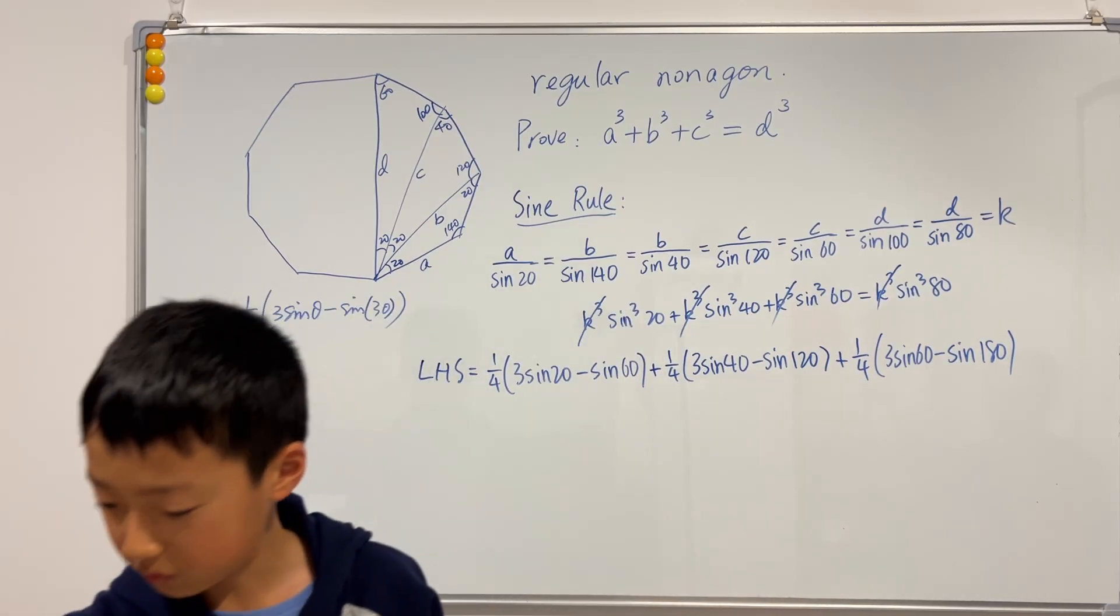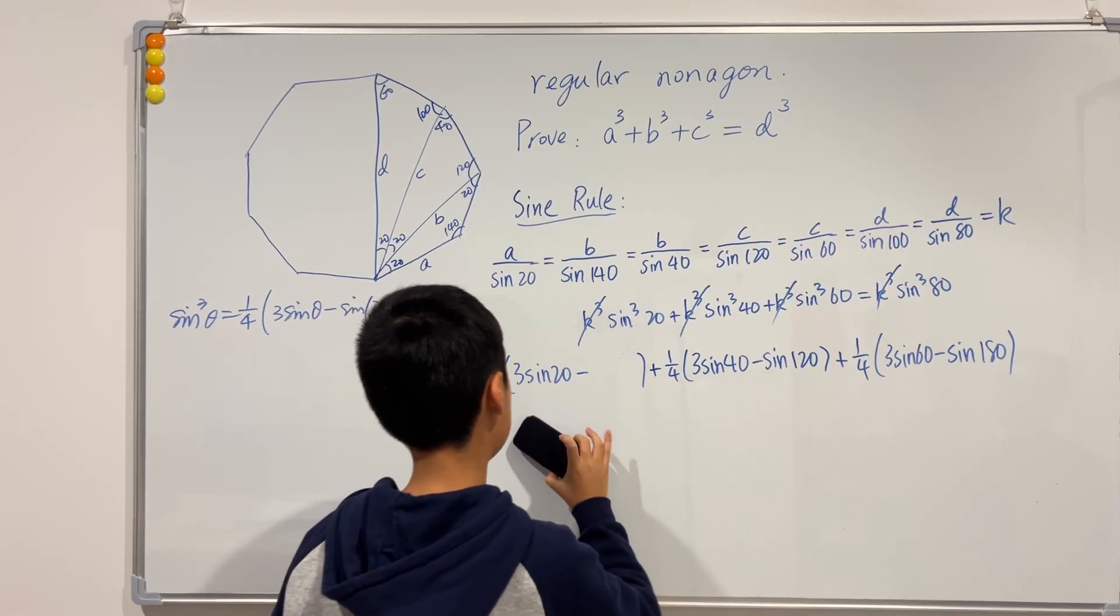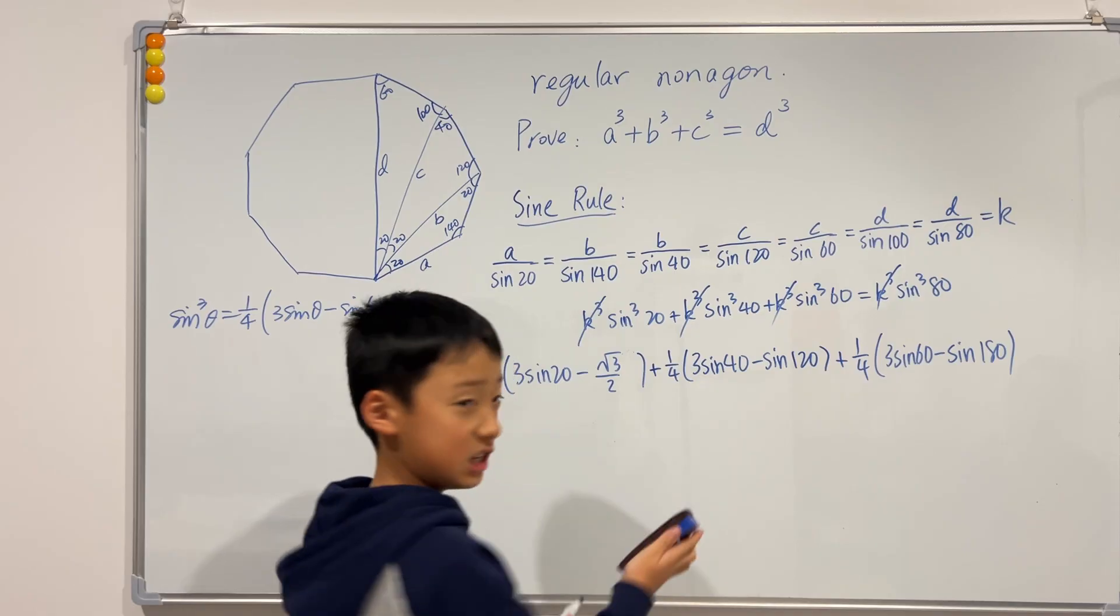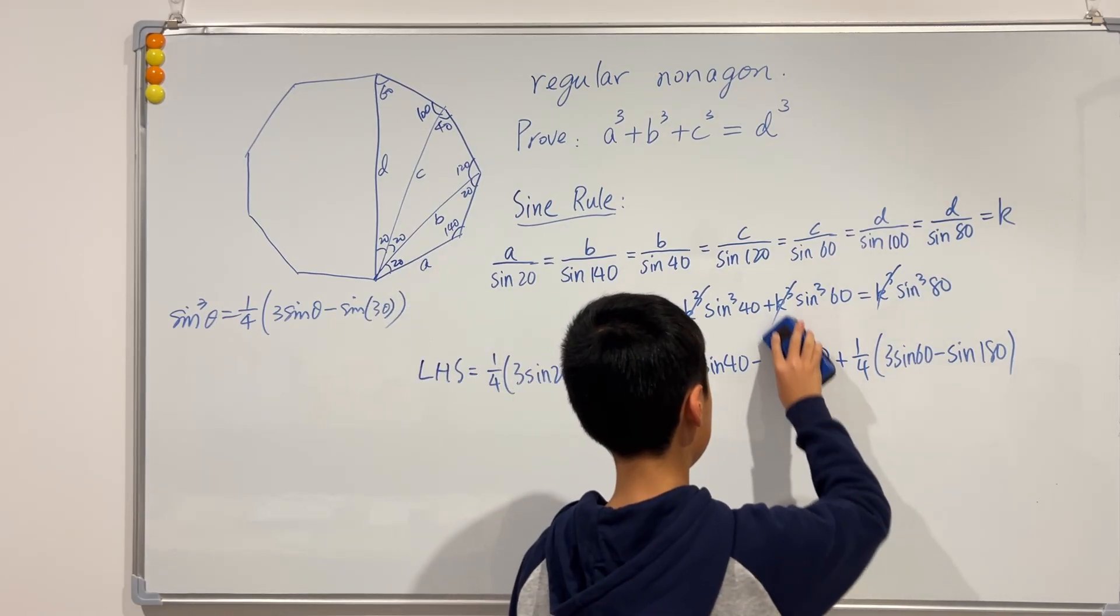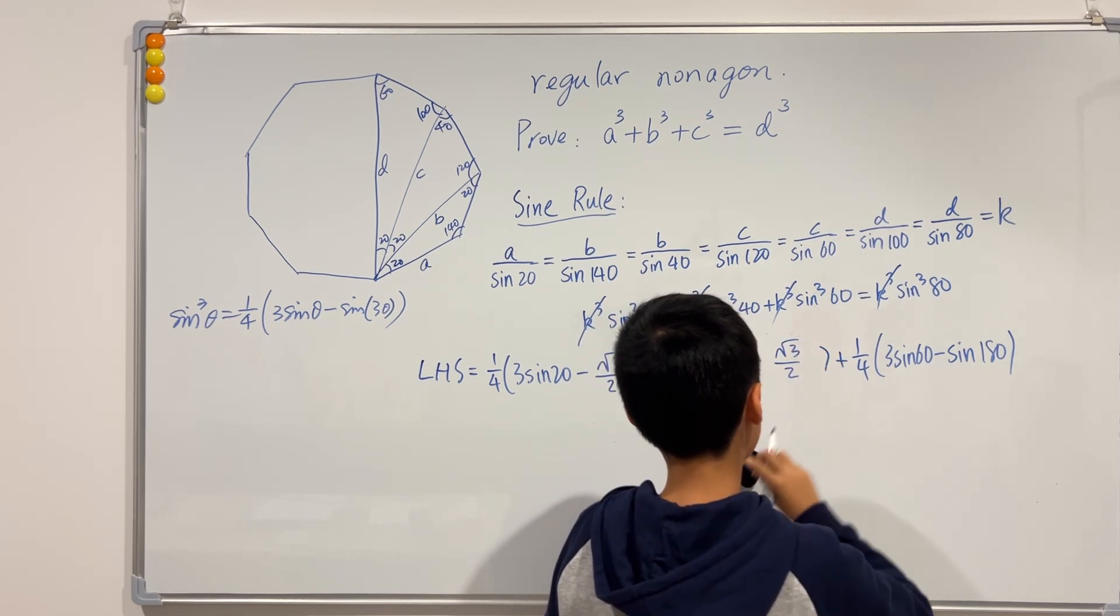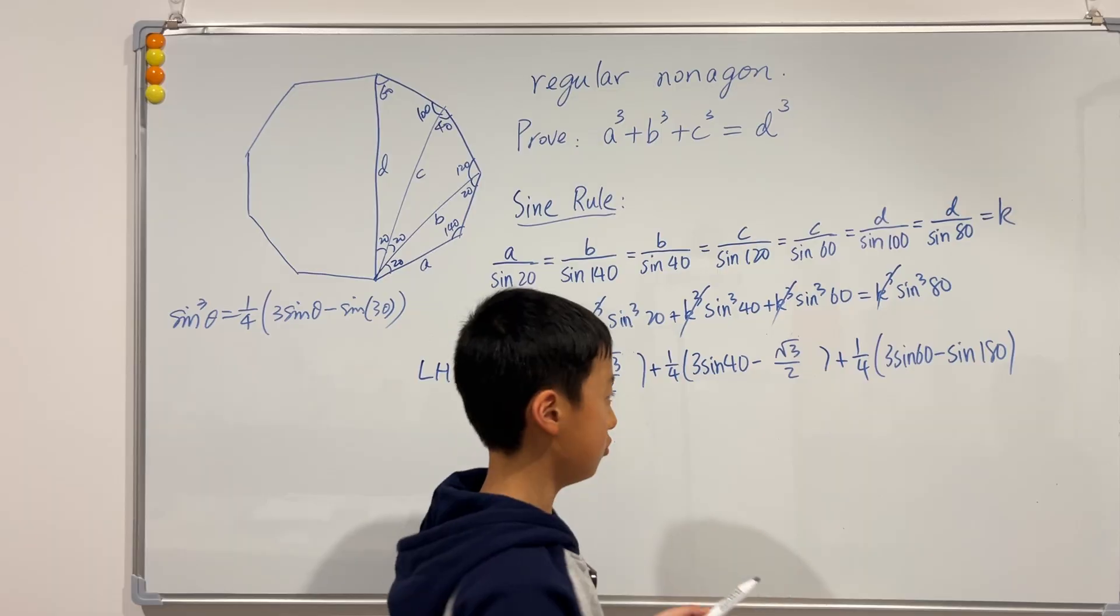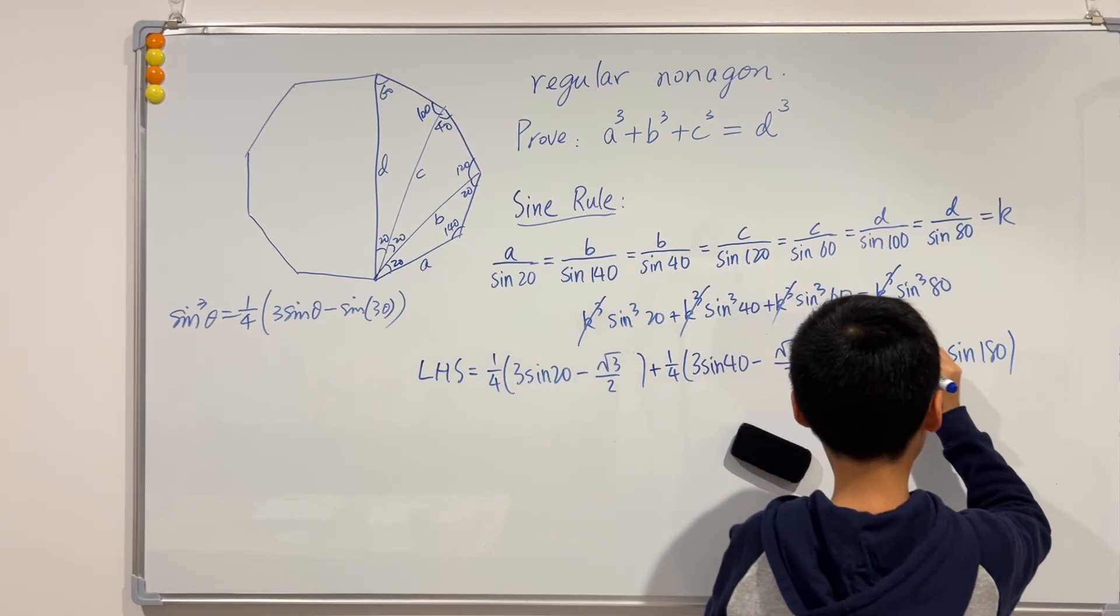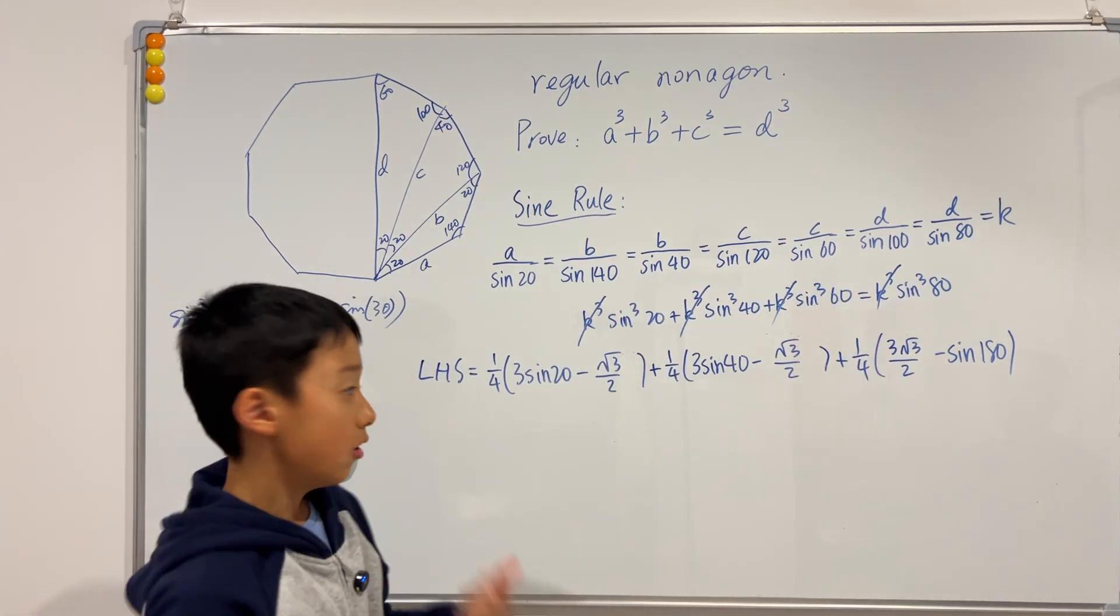And now we can change some of the terms because sine of 60 is just square root of 3 over 2. Sine of 120 is just sine of pi minus 120 which is sine of 60 which is square root of 3 over 2. And we know that this sine of 60 is also square root of 3 over 2 multiplied by 3 is 3 square root of 3 over 2.